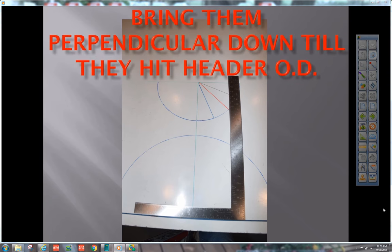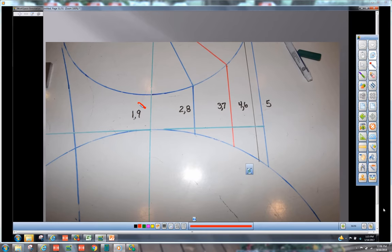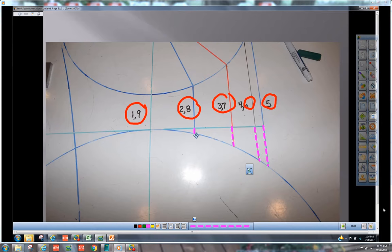Bring them perpendicular down until they hit the header OD. Number them accordingly. One and nine at the top of the pipe. Two and eight. Three and seven. Four and six. And then five. We basically just drew a saddle.